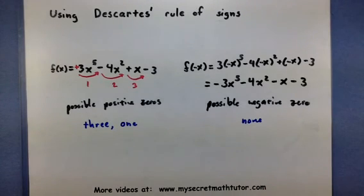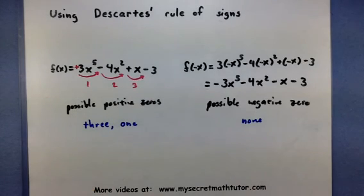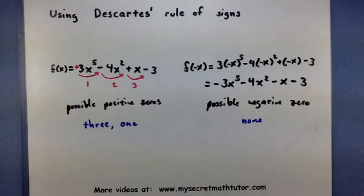And there you go. So, remember that when you're looking for the possible positive zeros, look at the sign changes in the original. When looking at the possible negative zeros, count the sign changes in f of negative x. If you'd like to see some more videos, please visit MySecretMathTutor.com.